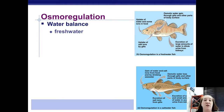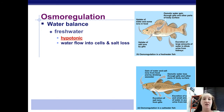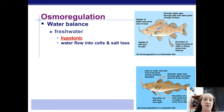For a freshwater fish, the surrounding solution is hypotonic — there are fewer solutes in the lake than in the fish, because the fish is full of salts and nutrients. So water is going to want to flow into the fish, and salts from the fish's body are going to be lost to the water at all times. That's diffusion and osmosis.